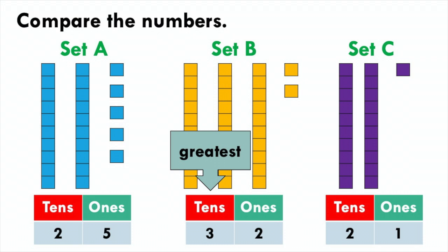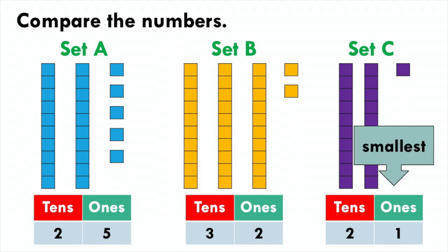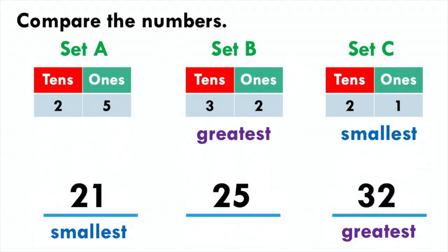Now let us look for the smallest number. I am comparing between 2 tens in set A and 2 tens in set C. Since the number of tens is the same, I look at the ones. I have 5 ones in set A and 1 one in set C. 1 is smaller than 5, so 21 is the smallest number. Now I know the greatest and smallest number, so I can order them from smallest to greatest: 21, 25, then 32.